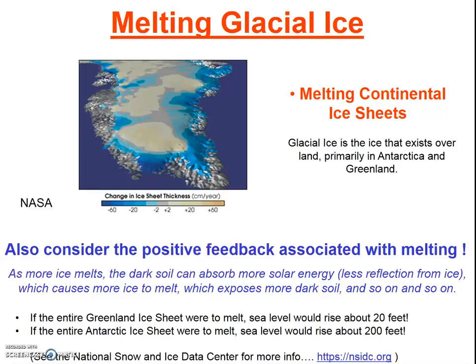If the Greenland ice sheet melted, scientists estimate sea level would rise about six meters, or twenty feet. If all of the Antarctic ice sheet were to melt, sea level would rise by about two hundred feet. That's an enormous amount of water. Nobody is suggesting these two ice sheets are going to melt tomorrow, but they are melting faster than we anticipated, and that will lead to rising ocean levels.